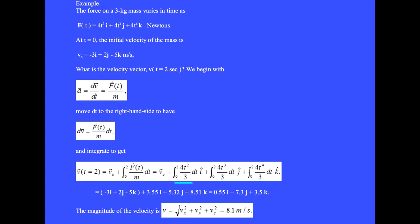Here is the initial velocity vector again. When you integrate 4t squared over 3 from 0 to 2, you get 3.55i-hat. The integration of the y component, 4 thirds t cubed from 0 to 2, gives 5.32j-hat. And the k-component integration gives 8.51.